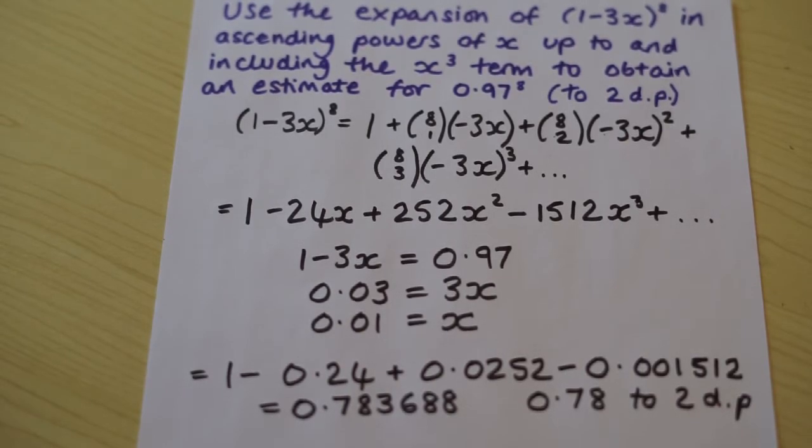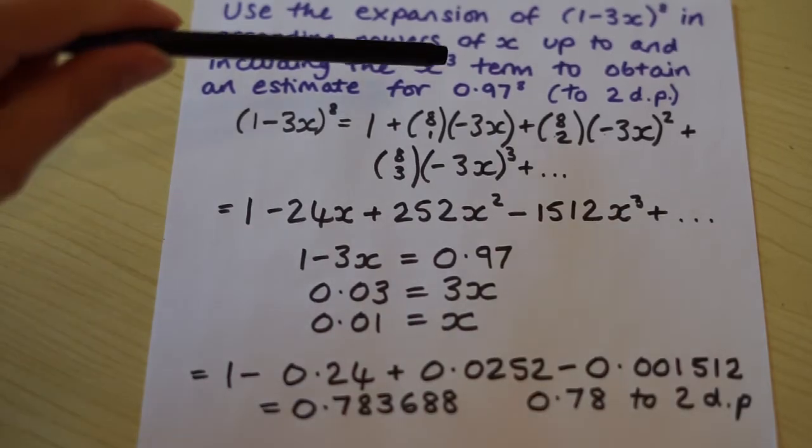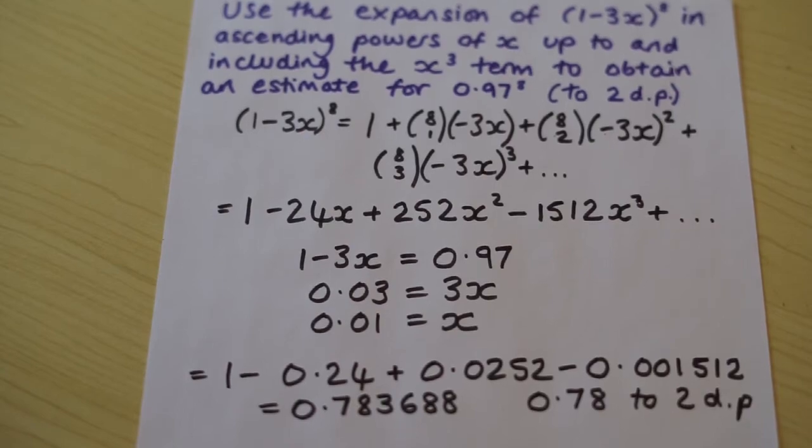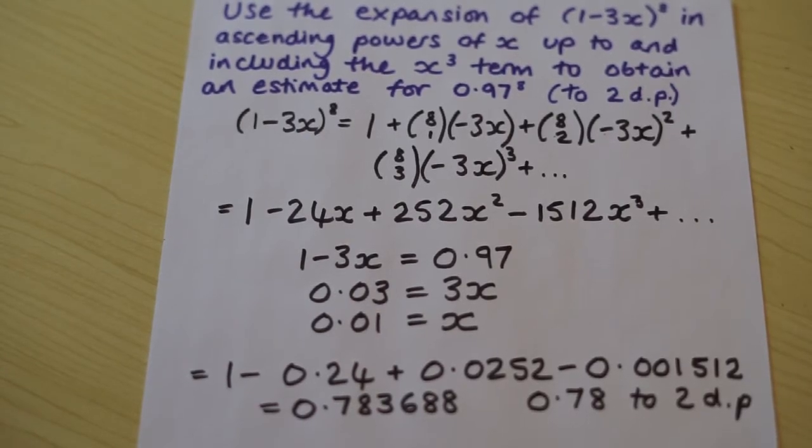We can have a quick check on our calculator what the actual value of 0.97 to the power 8 is. And when we do that and round it to two decimal places, we find out it's the same thing. It is 0.78. So that's a good check that we've done the job correctly. We've used the binomial expansion correctly to estimate it.